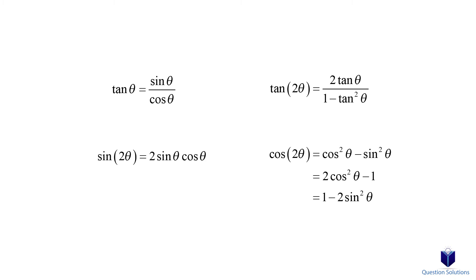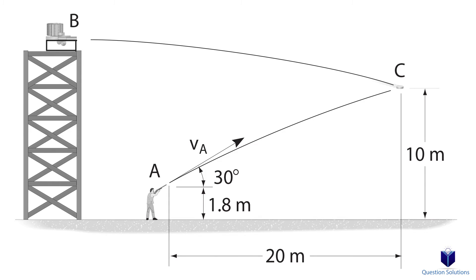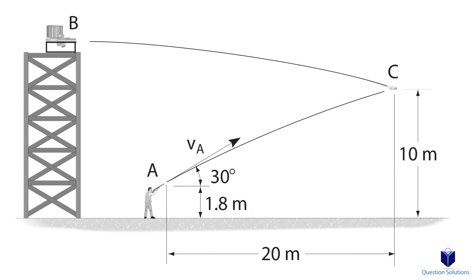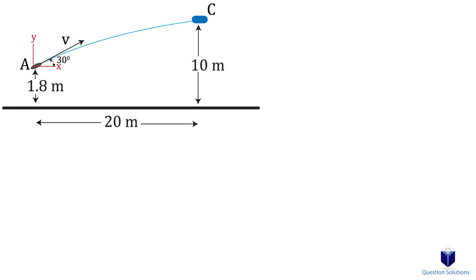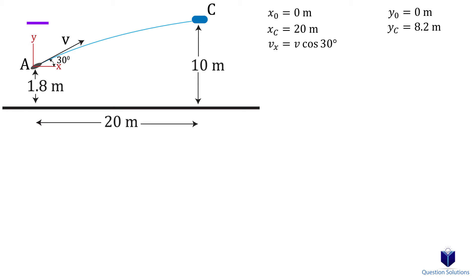Let's look at one last example. In this question, we need to determine the muzzle speed. Let's first put down our coordinate system, and I will place it at the gun. Using this simplified diagram, we can write down what we know. For the horizontal direction, the projectile starts at 0 meters and the final location is 20 meters. The horizontal component of velocity is V cos 30 degrees. For the vertical direction, the projectile starts at 0 meters, and the final location is 10 meters minus 1.8 meters, so 8.2 meters — that's because our coordinate system is 1.8 meters above the ground, so we only need the difference in height. The vertical component of velocity is V sin 30 degrees. Gravity is negative 9.81 meters per second squared.